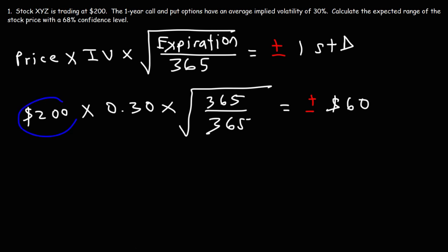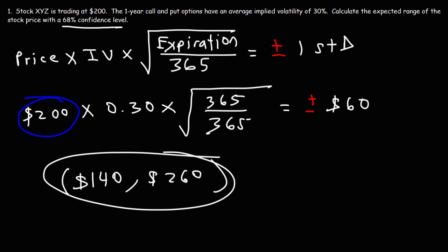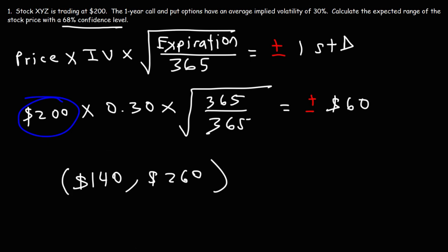The mean is the current price of the stock. So $200 minus $60 is $140, and $200 plus $60 is $260. Within one year, it's expected that stock XYZ will be somewhere between $140 and $260. It's not a guarantee — but the confidence level is 68%, meaning there's a 68% chance stock XYZ will be trading somewhere between those two prices one year from now. There's a 32% chance it will be outside that range.